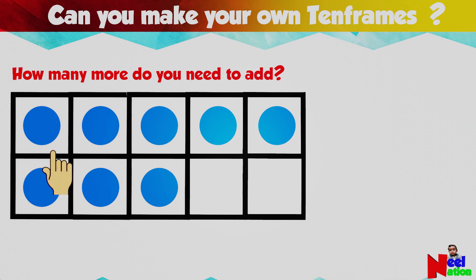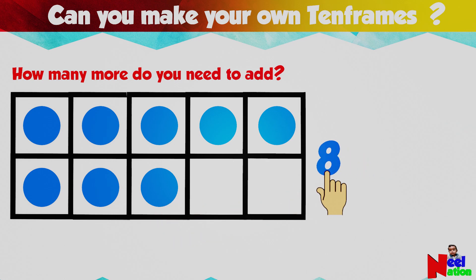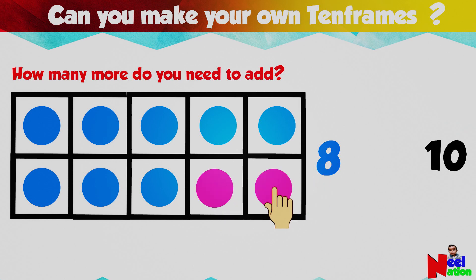Now let me ask you a tricky question. What number does this 10 frame show? Eight. How many more do you need to make it 10? One, two — two more! That's correct. When you add two more to number eight, you get 10. Eight plus two equals ten.